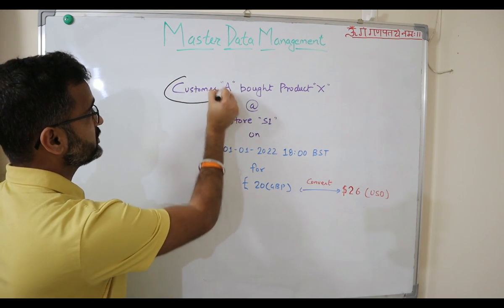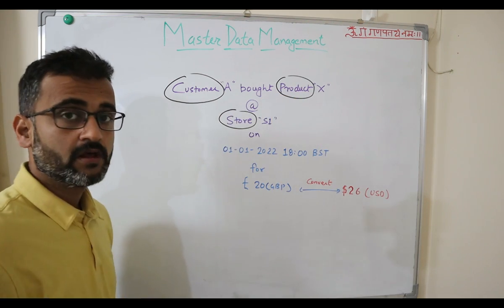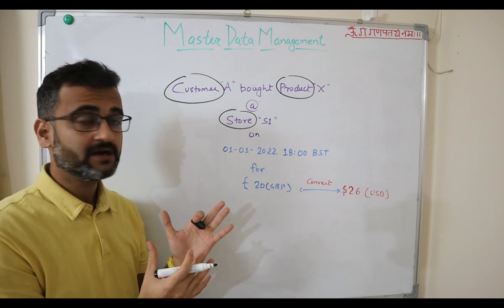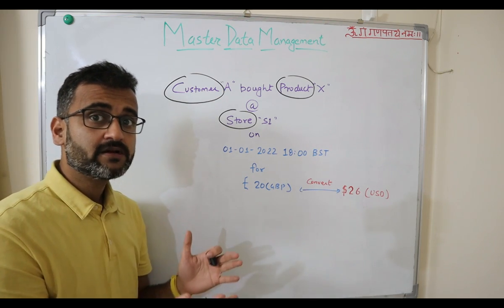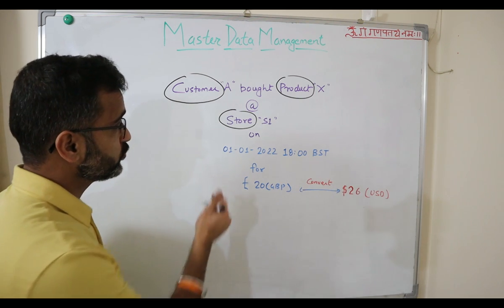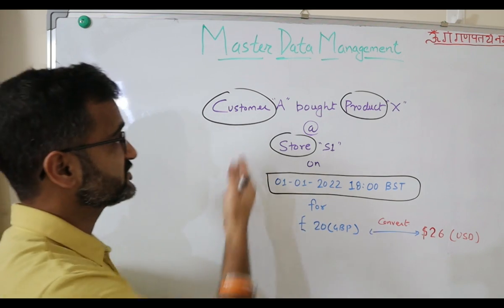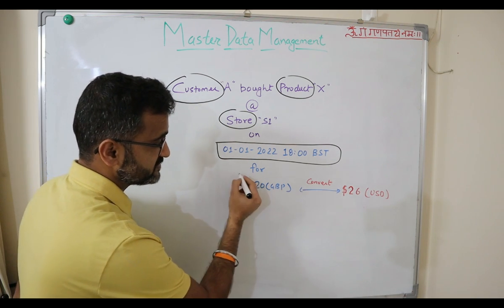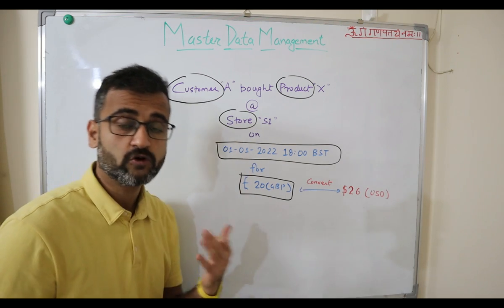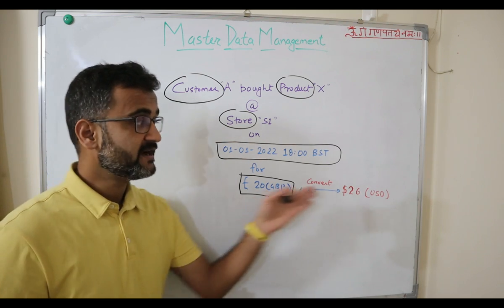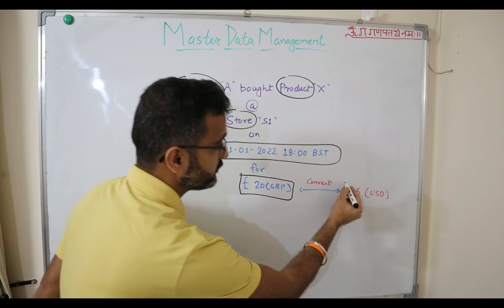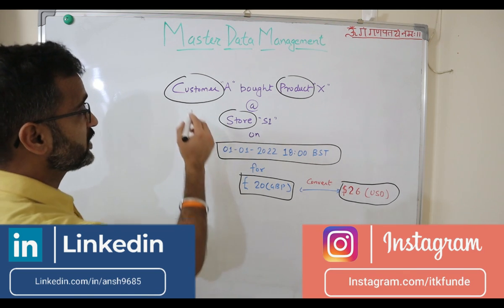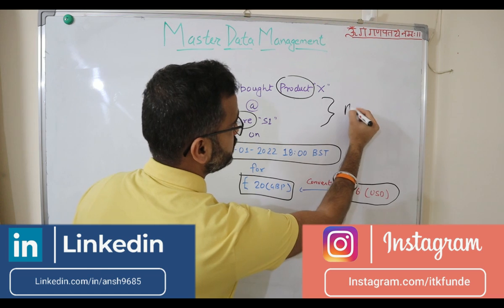There is data like customer, product, store. This data is called enterprise data because it rarely changes — you have to maintain it. Then apart from that, there is some other kind of data which will continue to change, like the time of purchase — this customer can come back again and buy something else. And then there is the price, which can also keep changing. Customer, product, store — all these are examples of your master data.